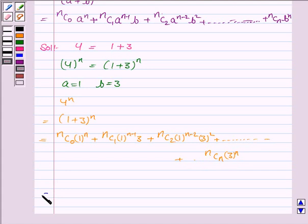Now, this is equal to nc0 plus nc1 into 3 plus 3 square into nc2 plus 3 to the power 3 into nc3 and so on.